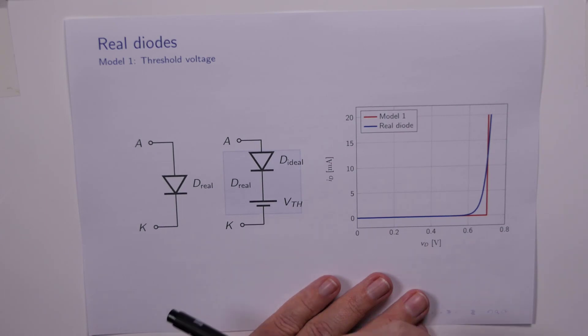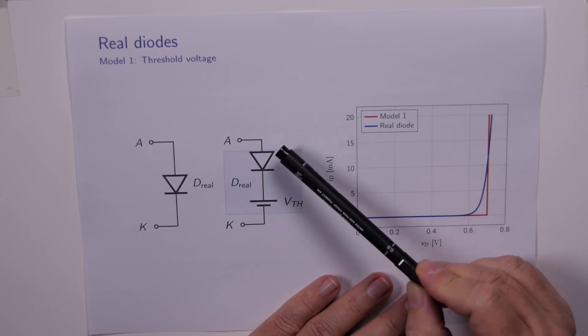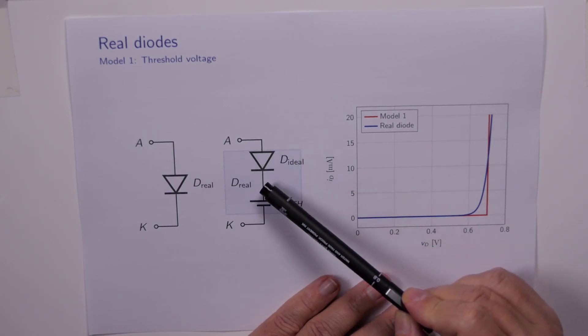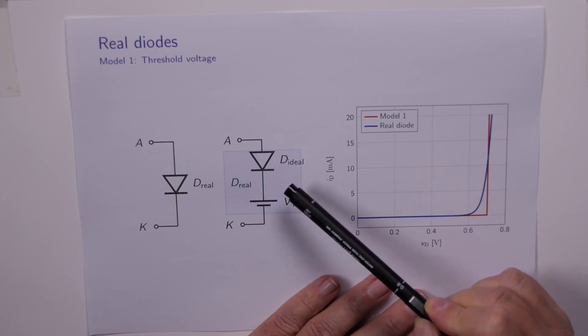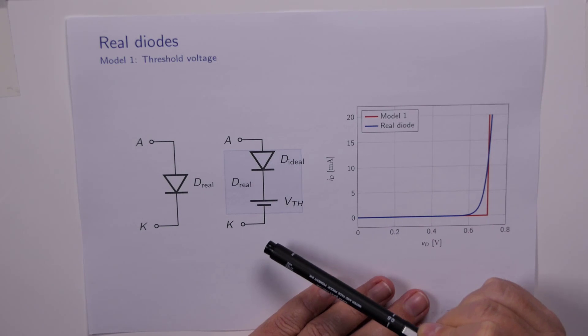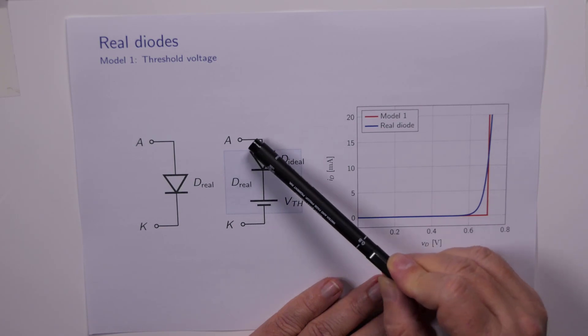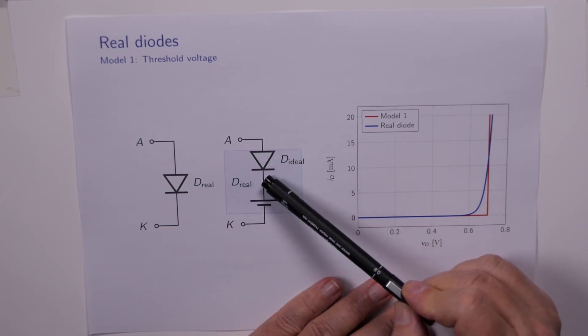And it's pretty clear that the diode now won't conduct until the voltage at the anode is greater than the voltage at the cathode, which is the threshold voltage. So the voltage at the cathode is, say, 0.7 of a volt. So the anode voltage has to rise above 0.7 of a volt before this ideal diode will turn on.